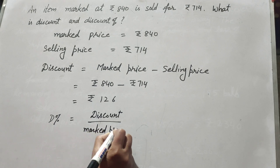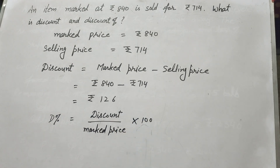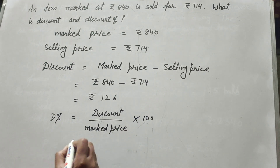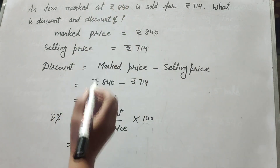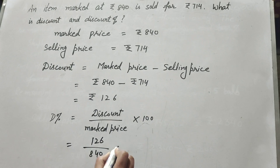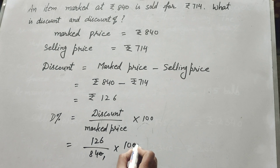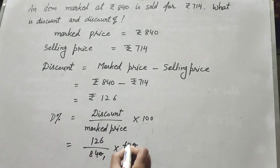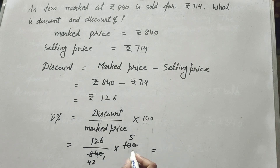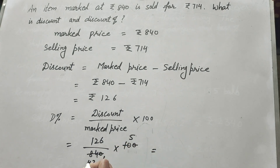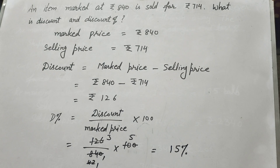Now we need to find the discount percentage. It is discount over marked price multiplied by 100. Discount is 126 and marked price is 840, so 126 over 840 multiplied by 100. We cancel the zeros, then 10 and 84 are both divisible by 2, giving 126 divided by 42, which equals 3. Then 3 multiplied by 5 equals 15. So the discount percentage is 15%.